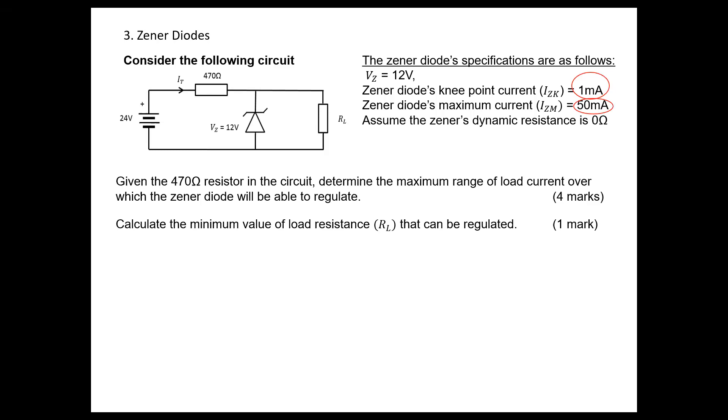Now we need to determine the maximum range of load current over which the Zener will be able to regulate. What will be the minimum current? The minimum load current we can have is zero ampere current through the load.